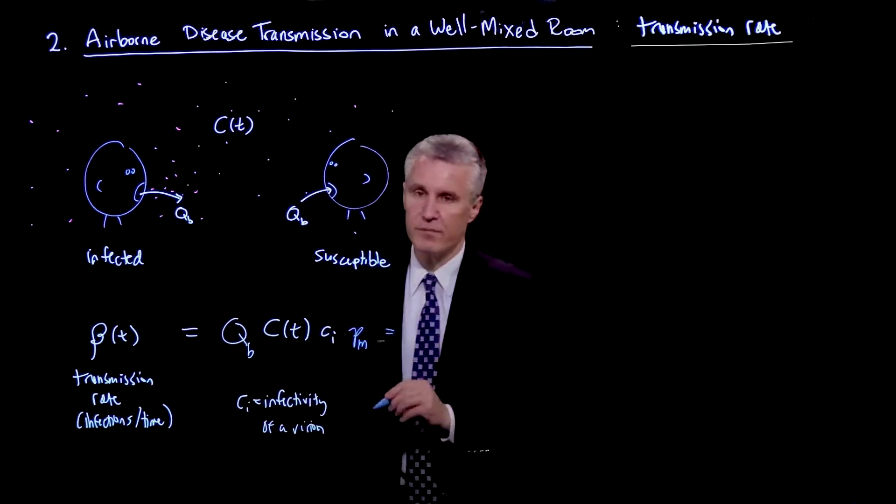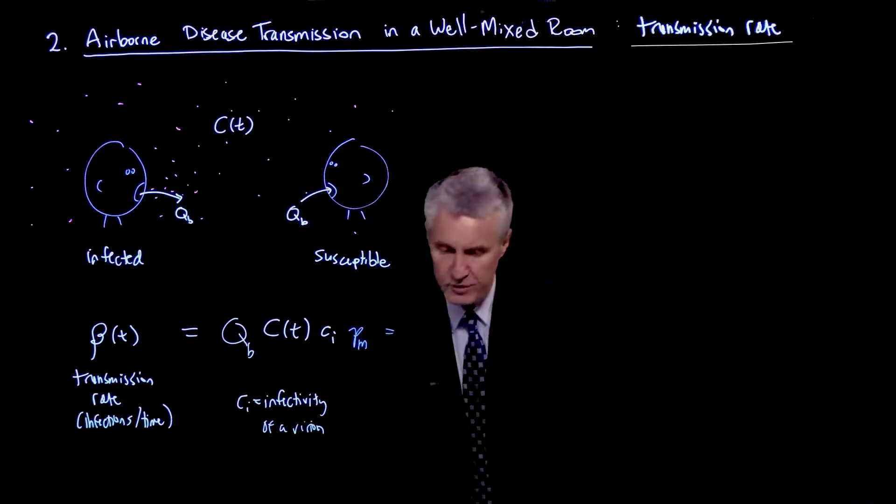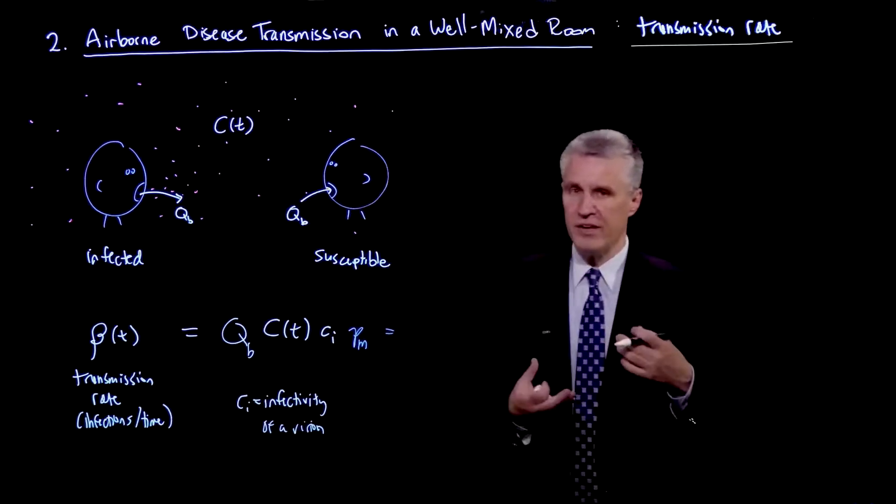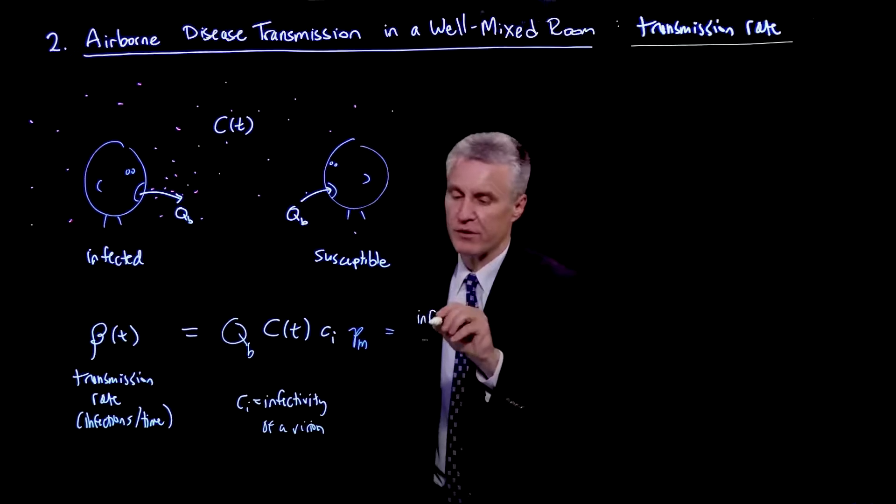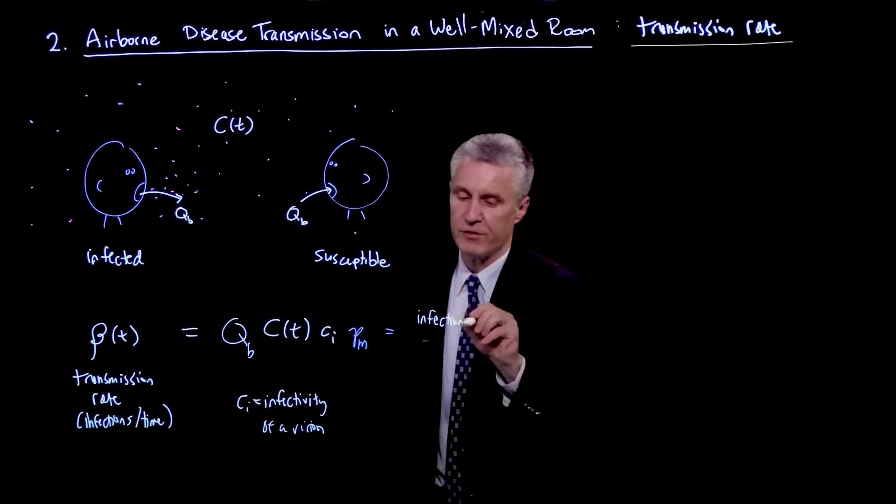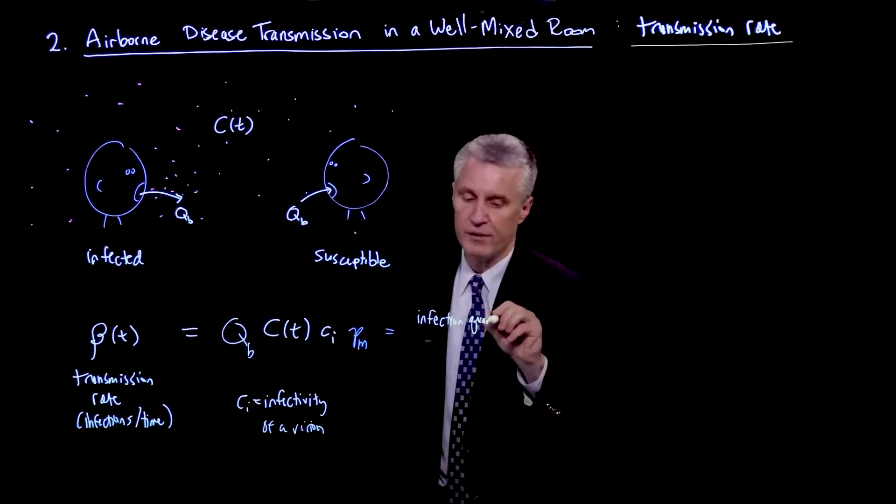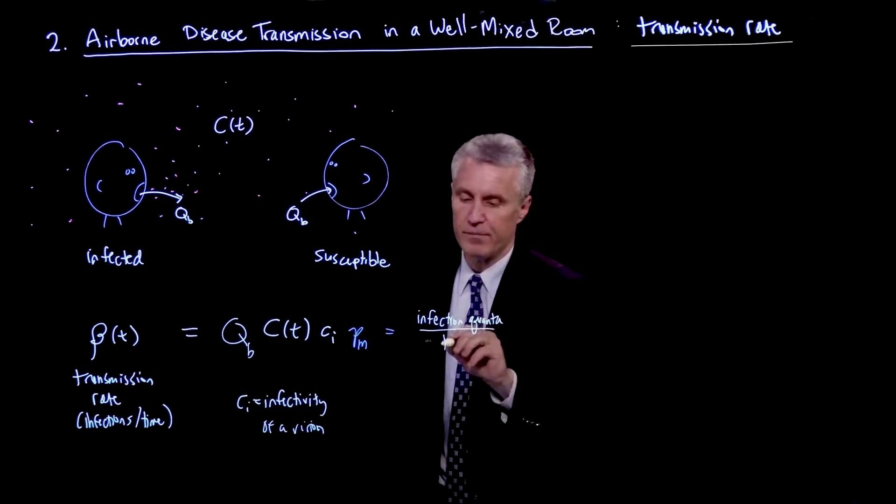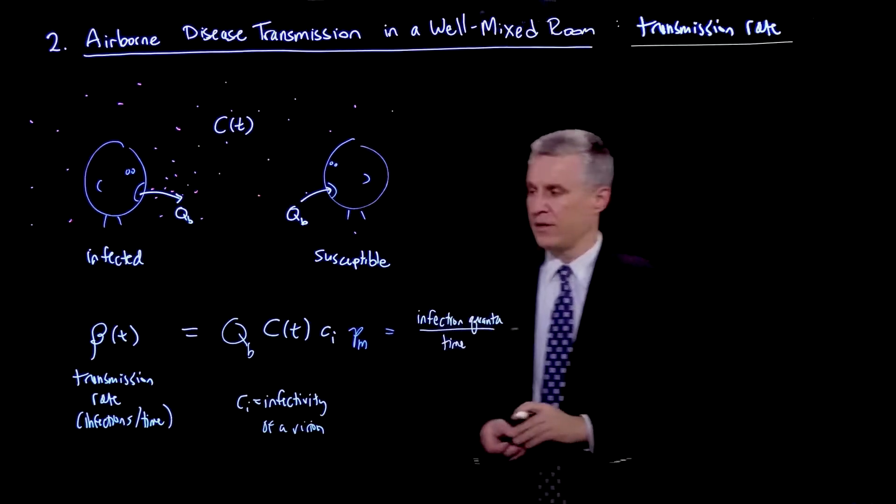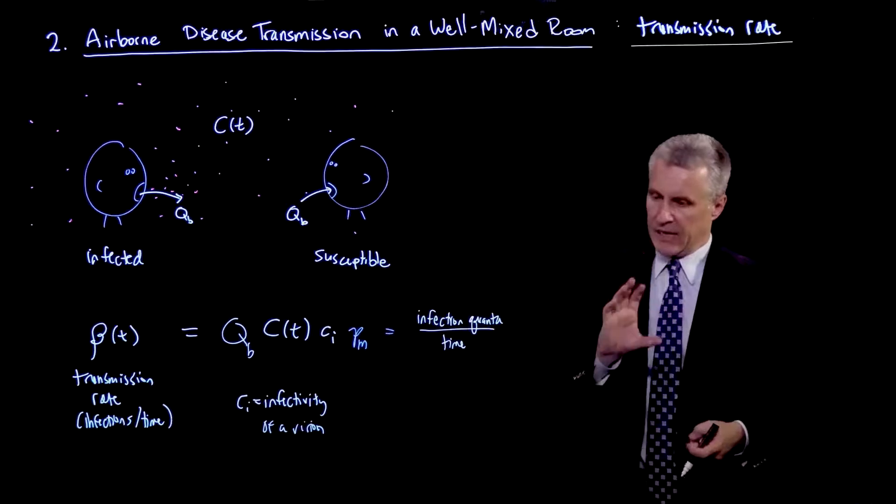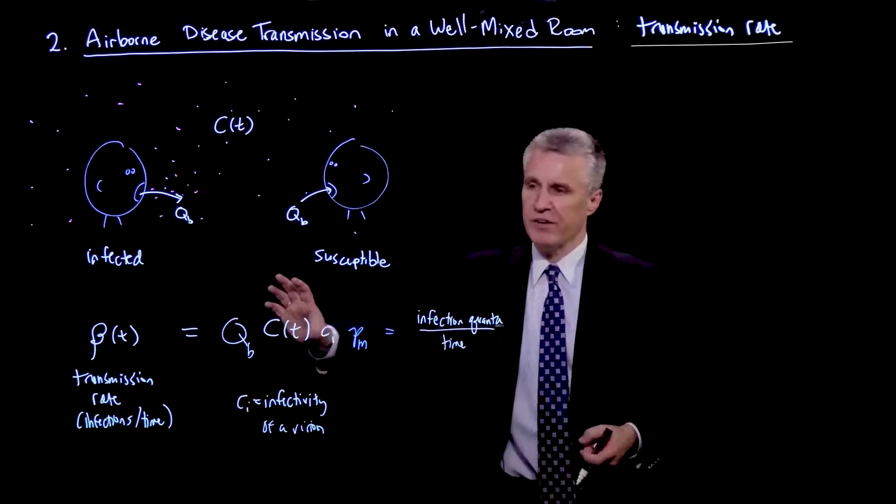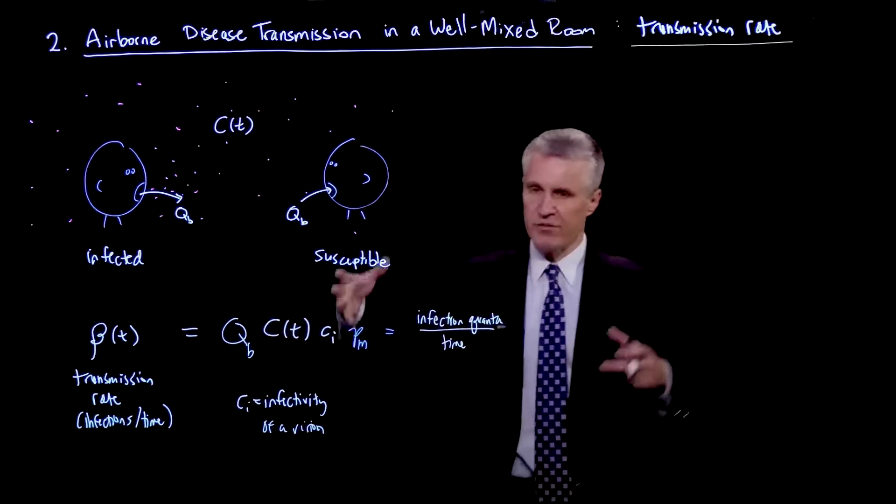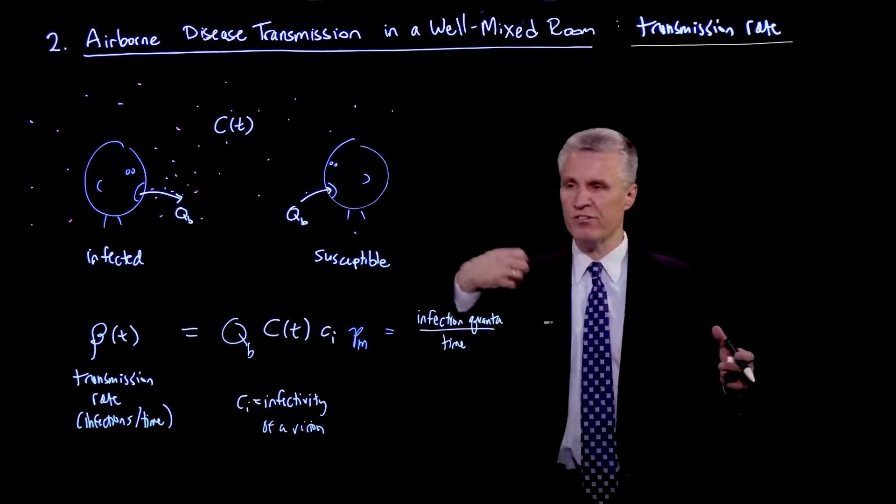And there's a useful notion in epidemiology, which is that of the infection quantum. So transmission rates are often written as infection quanta per time. And that is the rate at which a person which is susceptible will get infected. What we have not yet captured is, if you have a finite number of people in the room, when someone gets infected, they can't get infected again.